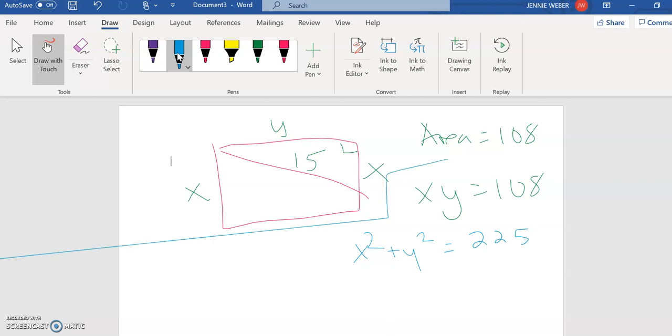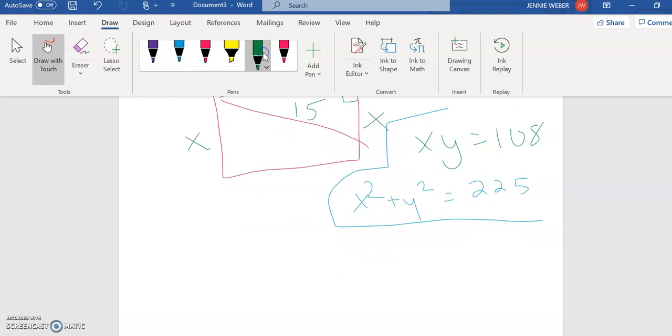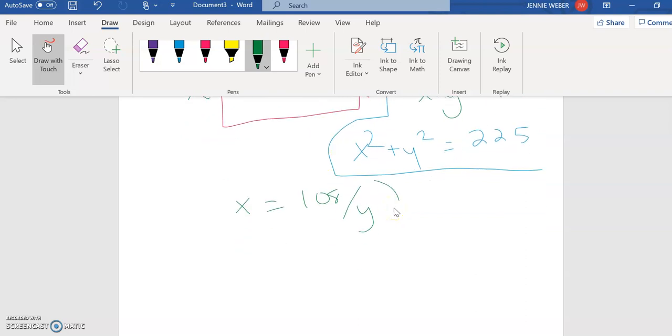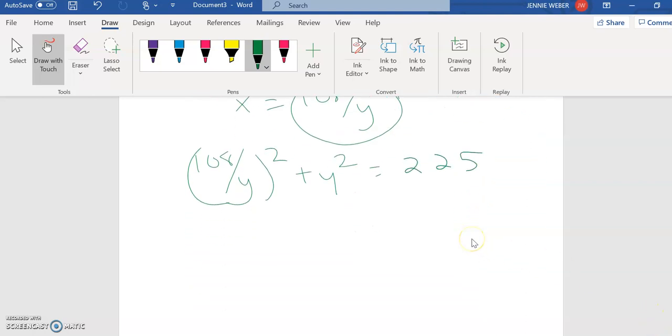So this is my system I want to solve. So I'm going to start by solving that first one, which is much cleaner, for one of the variables, so x equals 108/y. Then I'm going to take this and plug it in up here. So I have 108 divided by y squared plus y squared equals 225. Now I'm in one variable. Cool.